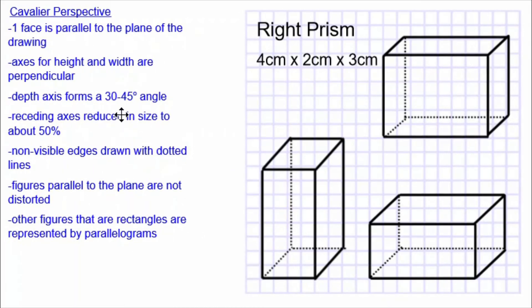The depth axis usually forms a 30 degree or 45 degree angle. And you can have the angle that you need in your drawing specified to you in the instructions for the drawing that you were asked to do. In this case, all three of these are drawn with an angle that is roughly 45 degrees.